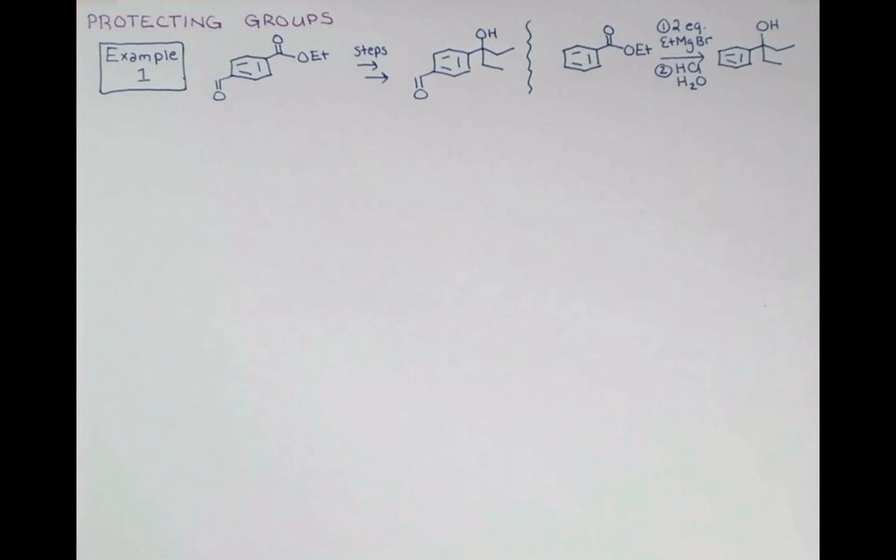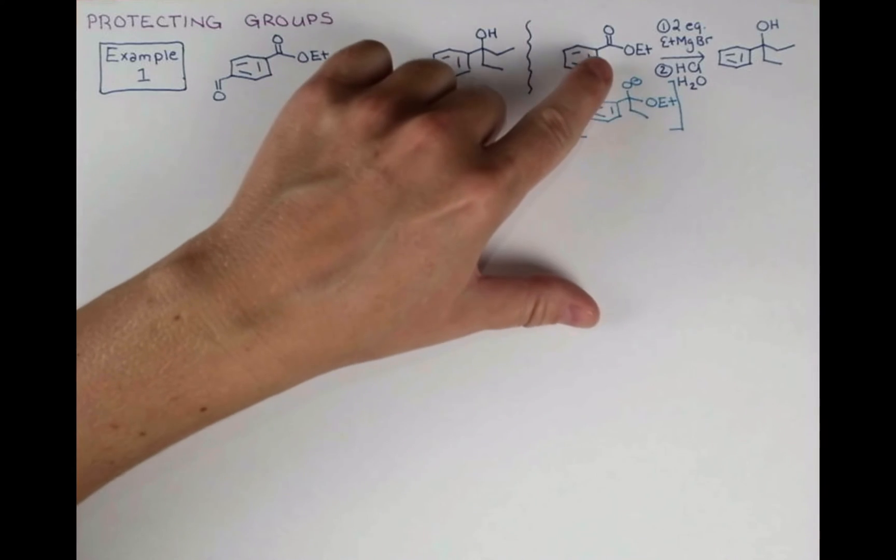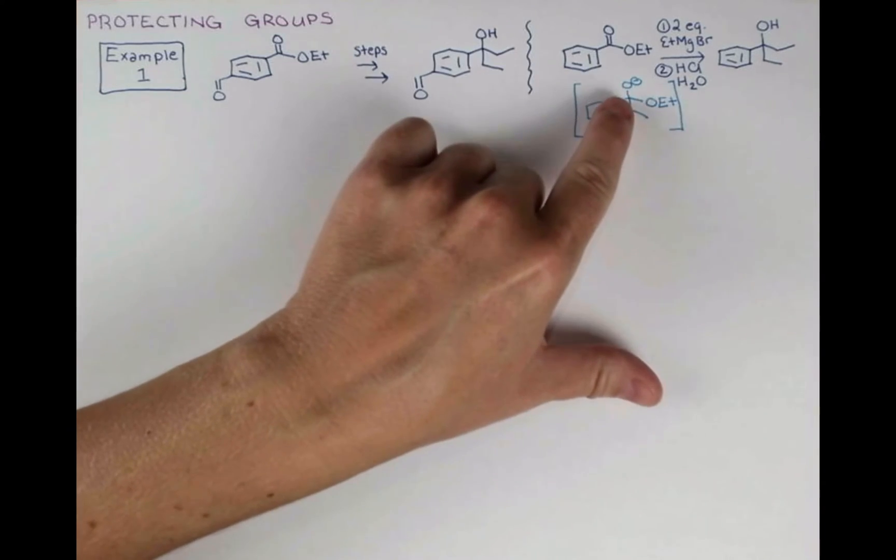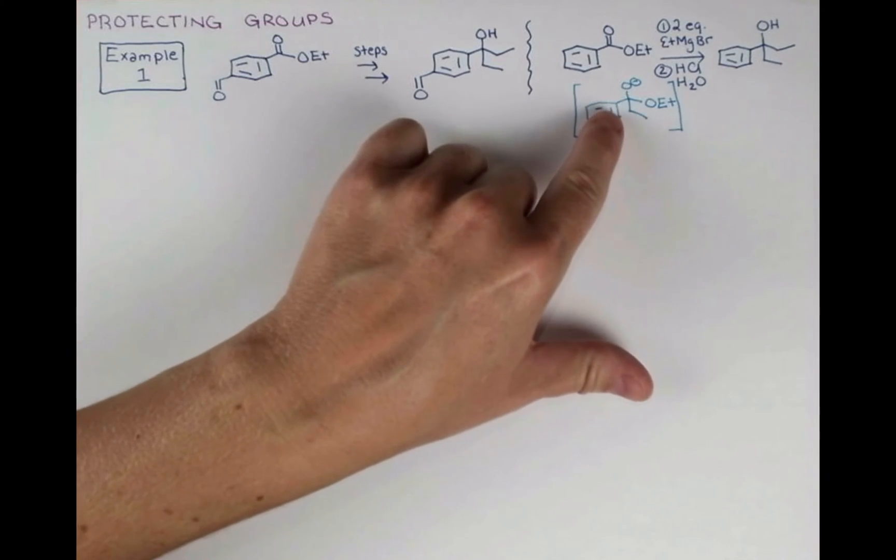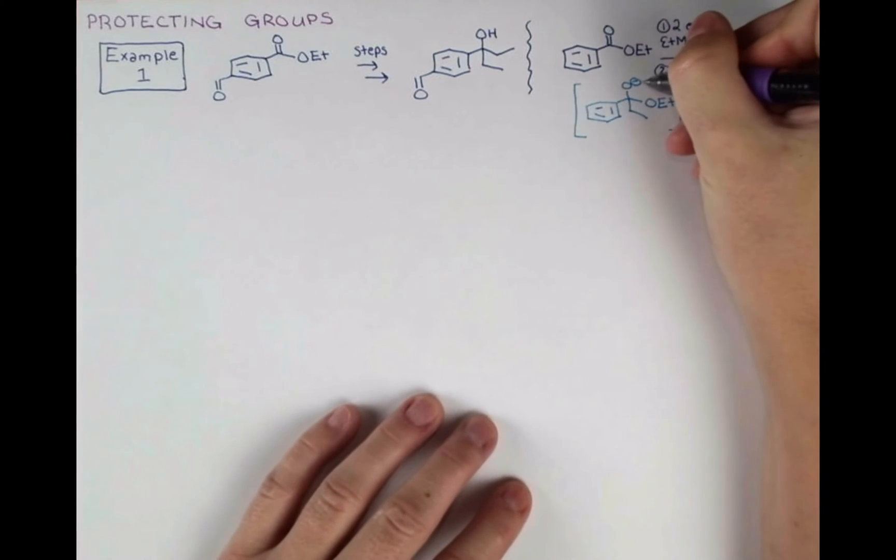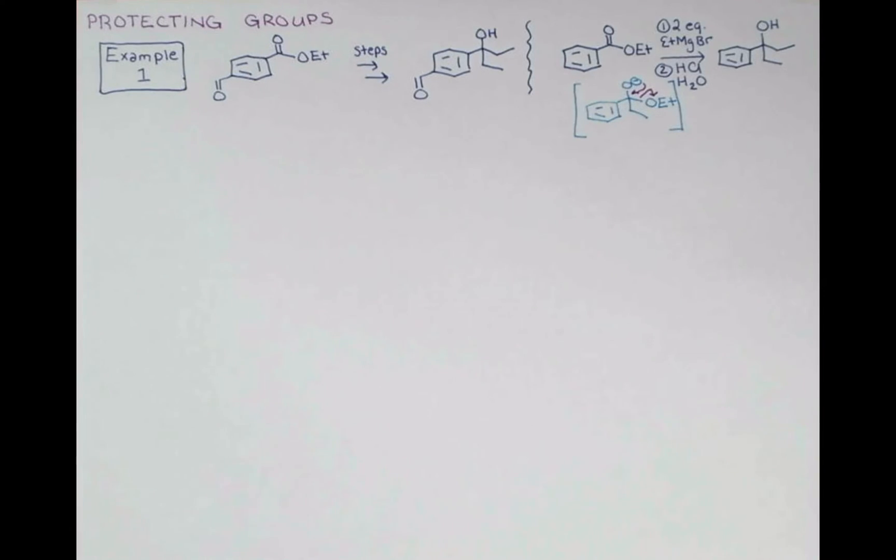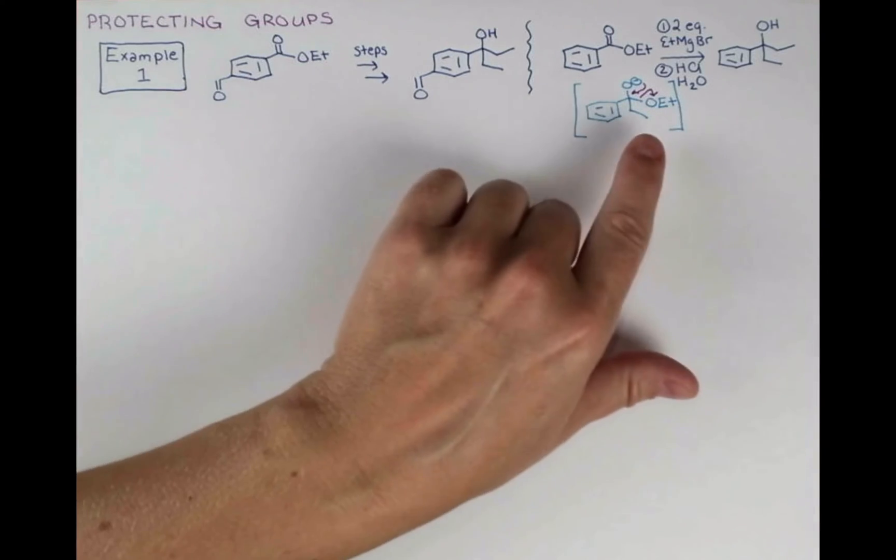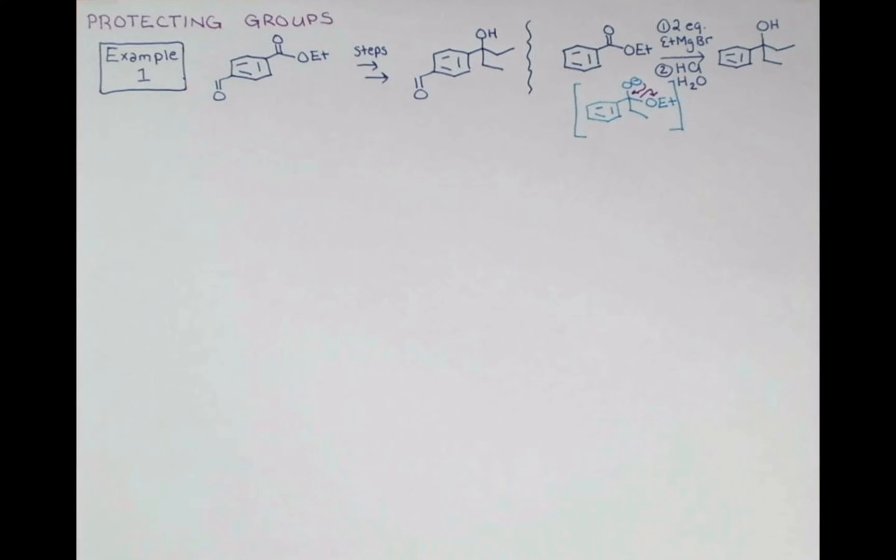I'll draw out the intermediate after the first equivalent of Grignard reagent attacks, in case you're a little unfamiliar with this reaction. The Grignard nucleophile attacks here, that pushes the electrons up onto oxygen, giving this tetrahedral intermediate, and then these electrons can push down, kicking out the ethoxy leaving group. That gives a ketone, which is attacked a second time by the Grignard reagent.